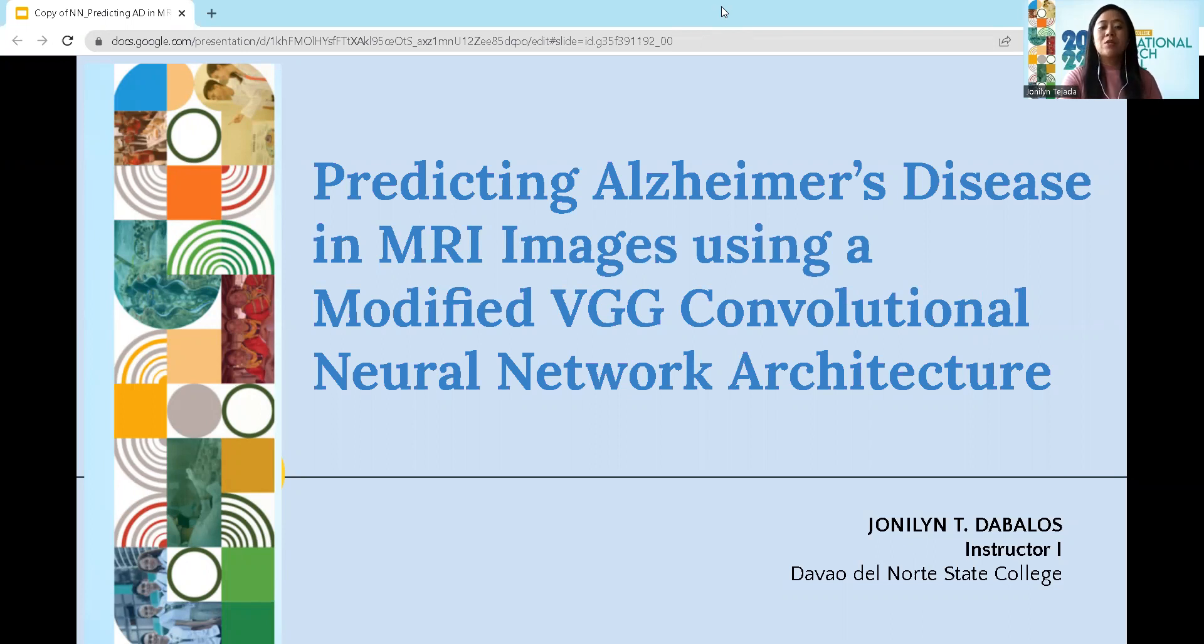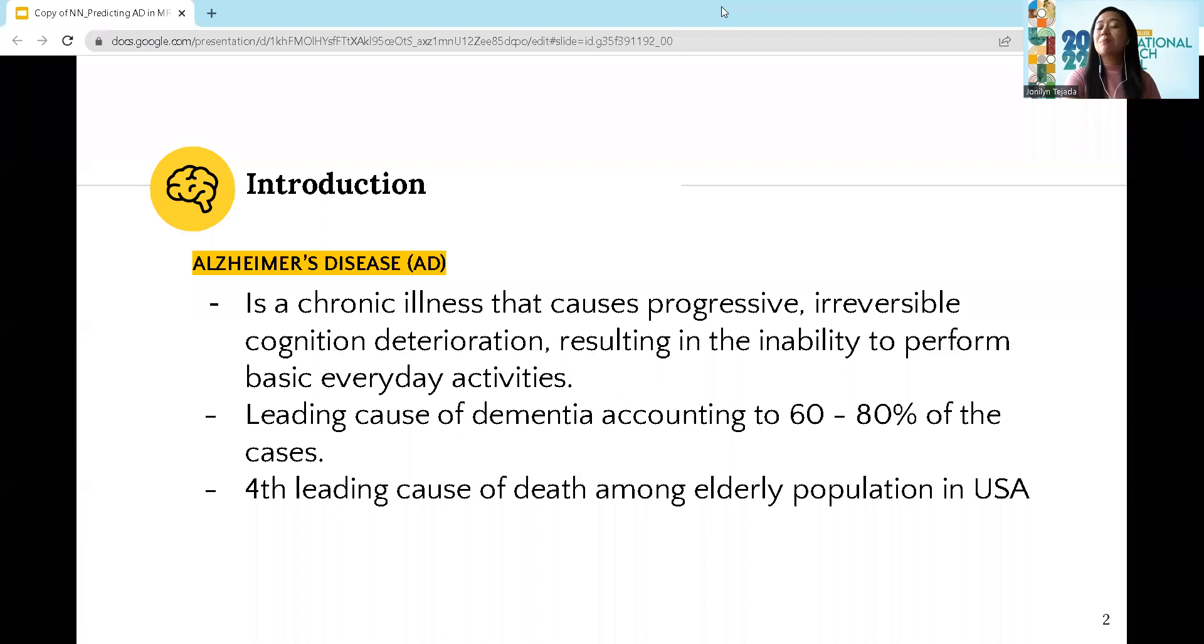As an introduction, Alzheimer's disease is a chronic illness that causes progressive irreversible cognition deterioration, resulting in inability to perform even the most basic everyday activities, such as difficulties of learning and remembering recent information, communicating such as speaking, reading, and writing, and performing executive functions such as reasoning, decision-making, and planning.